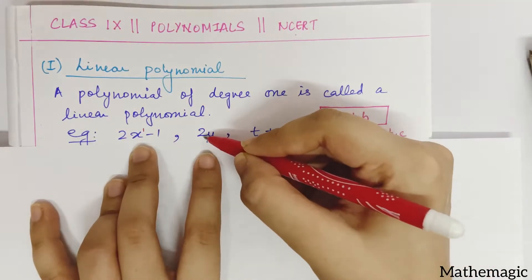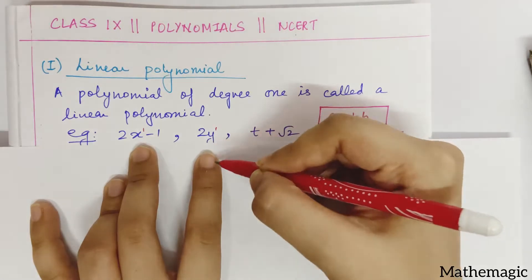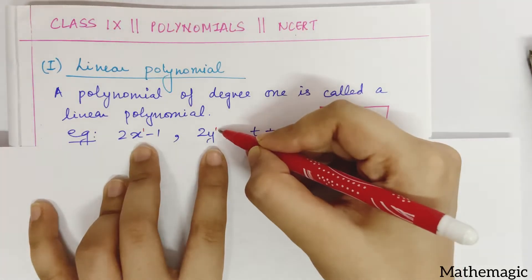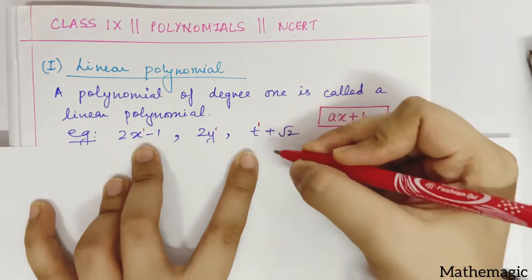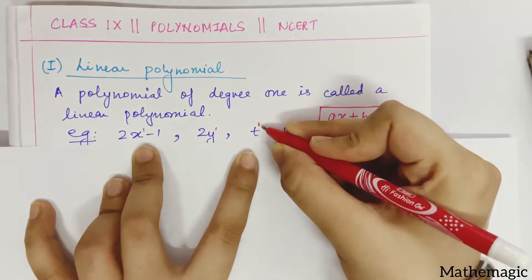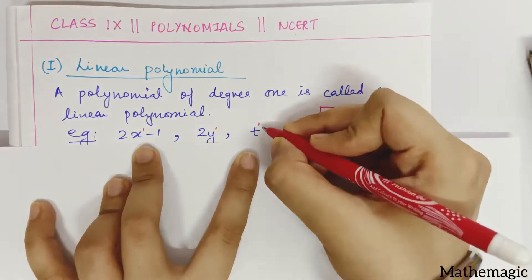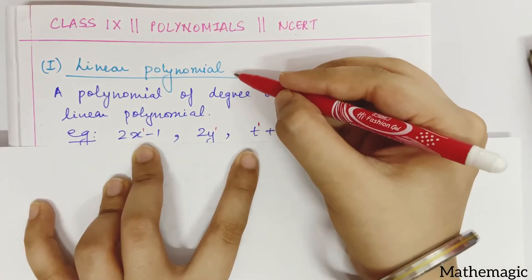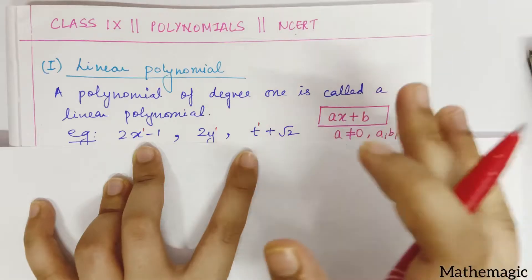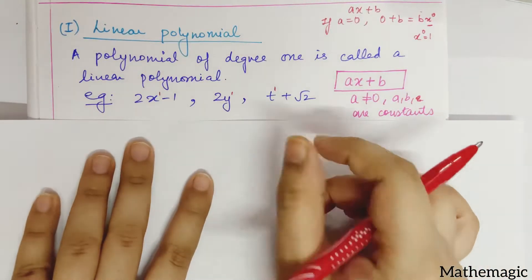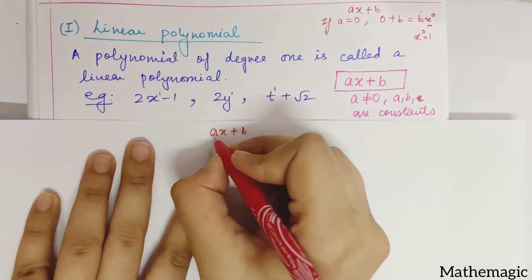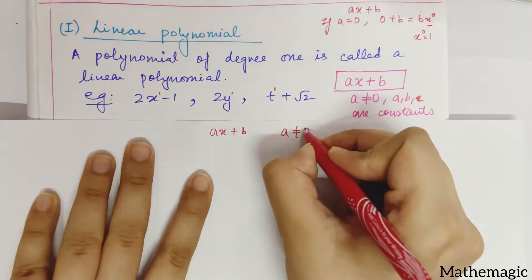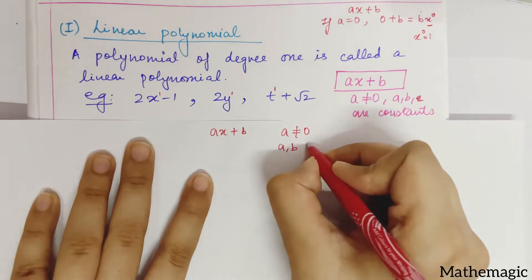Another example: t plus root 2 — t's power is 1, so again 1 is the degree of the polynomial. When the degree is 1, it will be called a linear polynomial. The general form of a linear polynomial is ax plus b, where a can never be zero and a and b are constants.